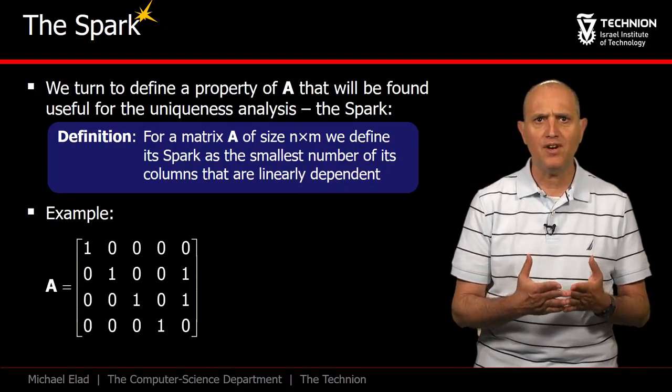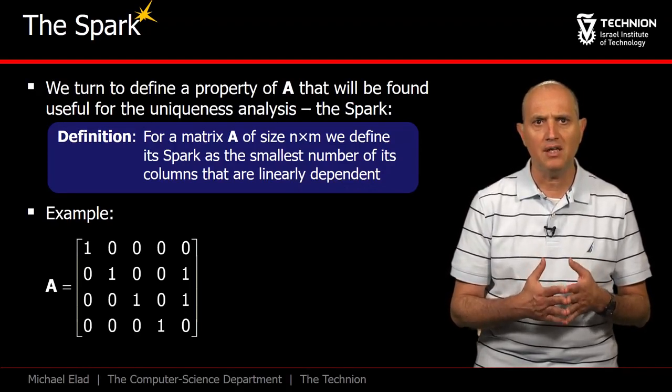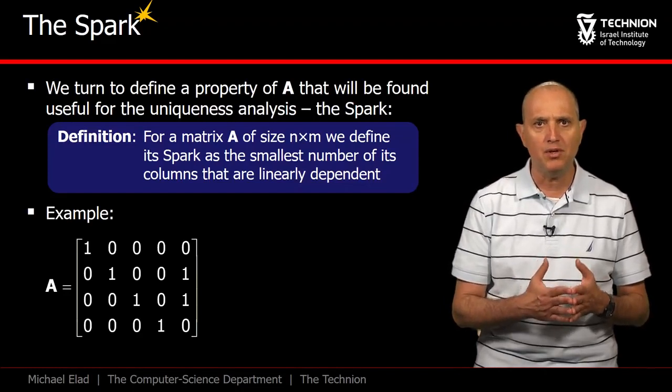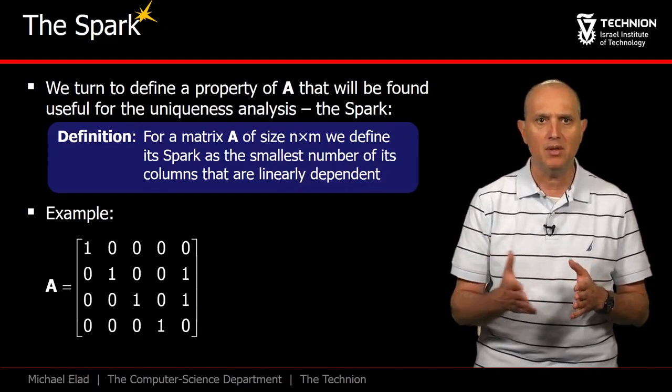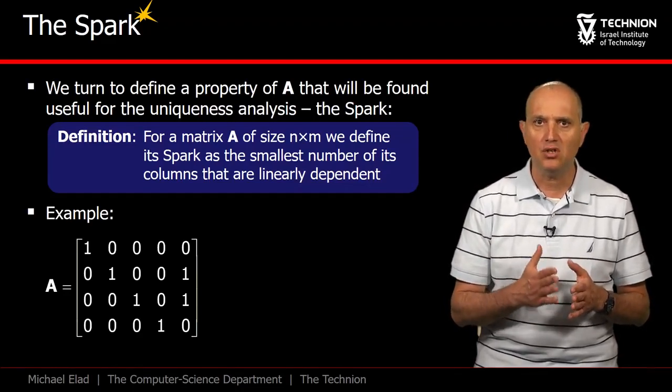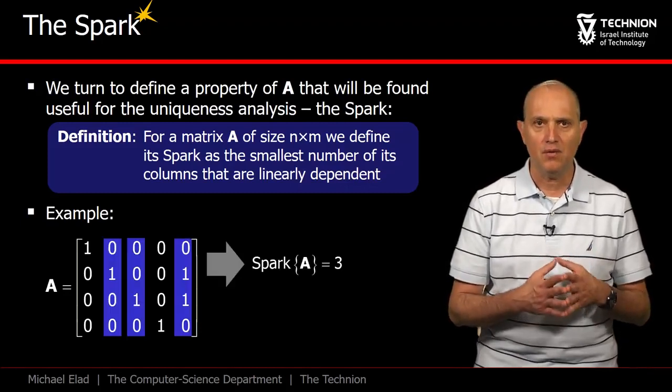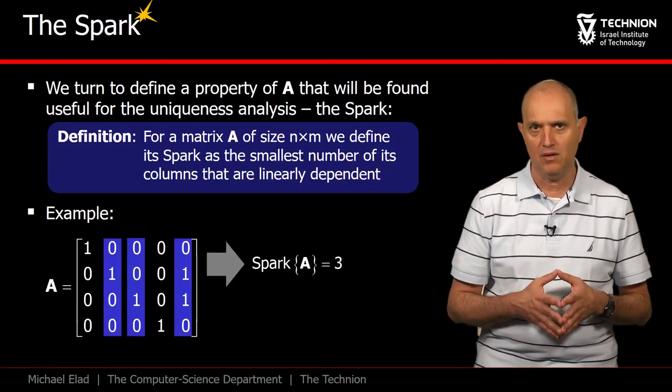Similarly, you cannot find a pair of columns that are linearly dependent, since this would imply that there are two columns that are copies of each other, up to a scale multiplication. This matrix does not have such columns. The spark in this case is 3, and here is the set of columns referring to this value.